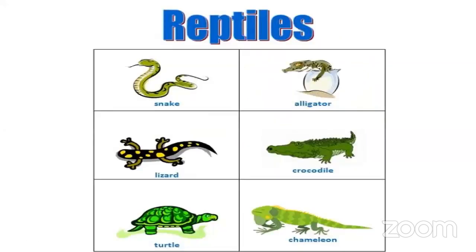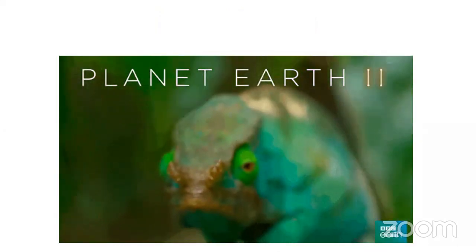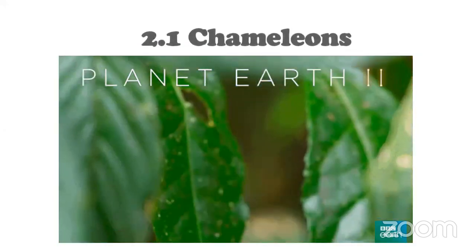Look at these reptile animals: snake, alligator, lizard, crocodile, turtle, chameleon. You must have seen snakes, lizards, turtle, but you must not have seen crocodile or chameleon. Chameleon must be a very new animal for you — you haven't heard of it before. So children, today I have a surprise for you. Today we are going to learn about chameleons.